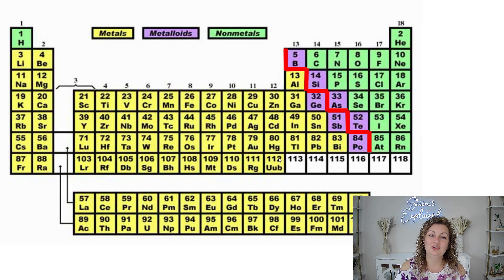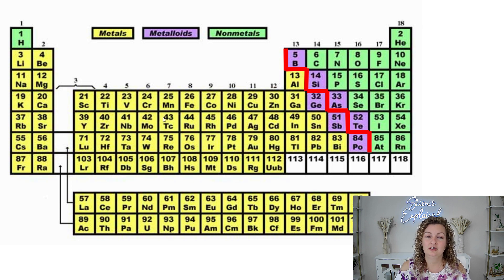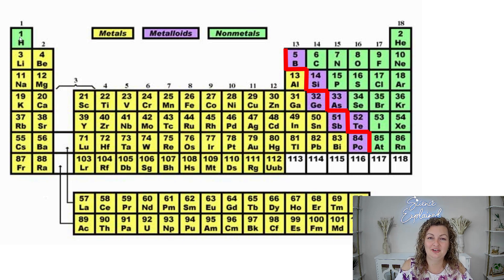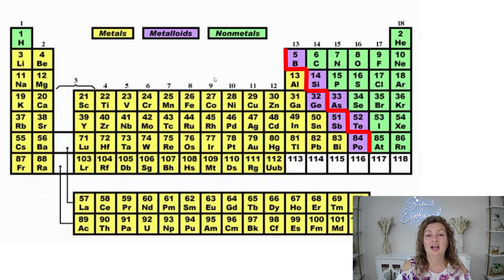If you look, you're going to see that our metals are all of the yellow elements. If we have this little zigzag line, or the staircase as it's called, you'll see it in a bold black line usually on your periodic table. To the left of that is really where your metals are going to be, with the exception of hydrogen. On the right hand side of that zigzag line are going to be your non-metals, all of these in green, with the addition of hydrogen being a non-metal. Right at the zigzag line, touching it or on it, is going to be our metalloids — those are the purple elements.